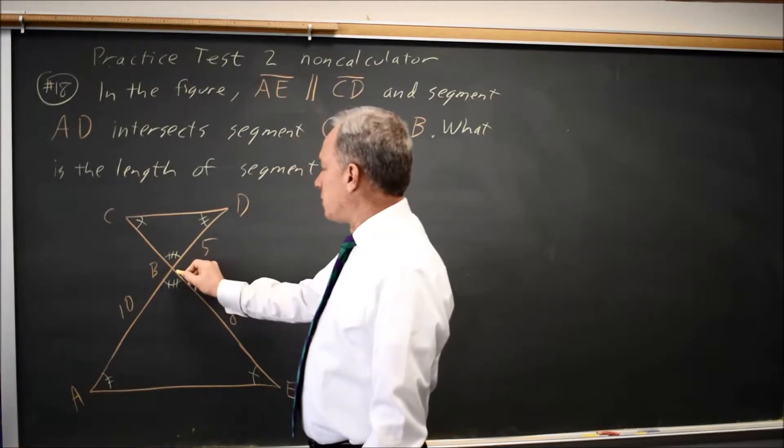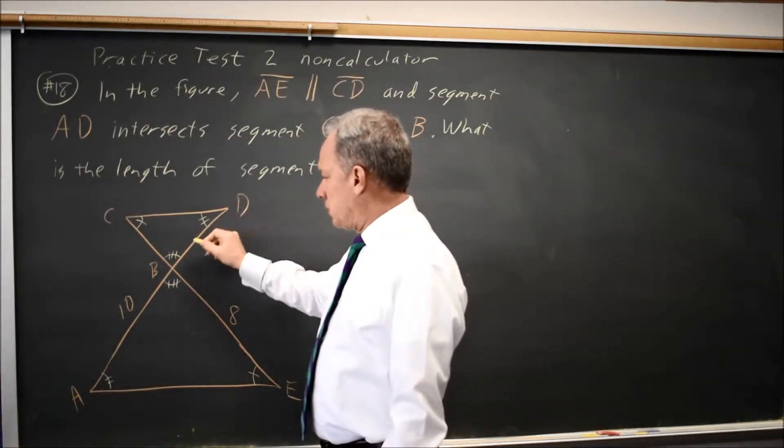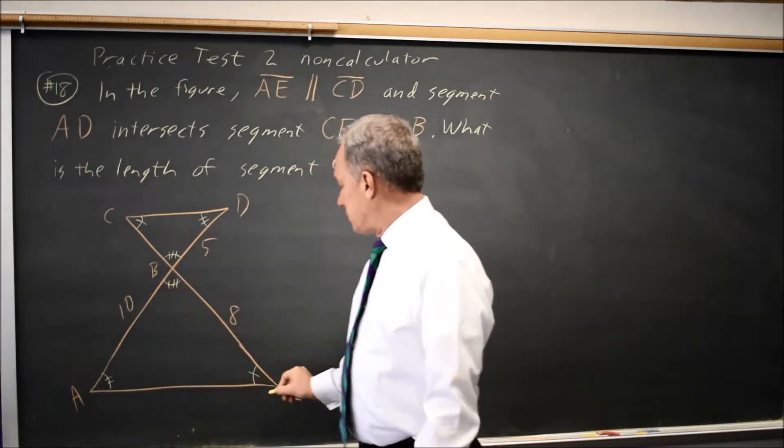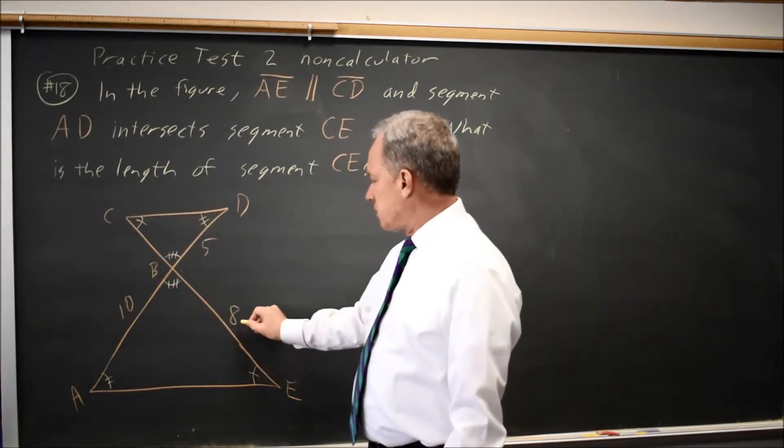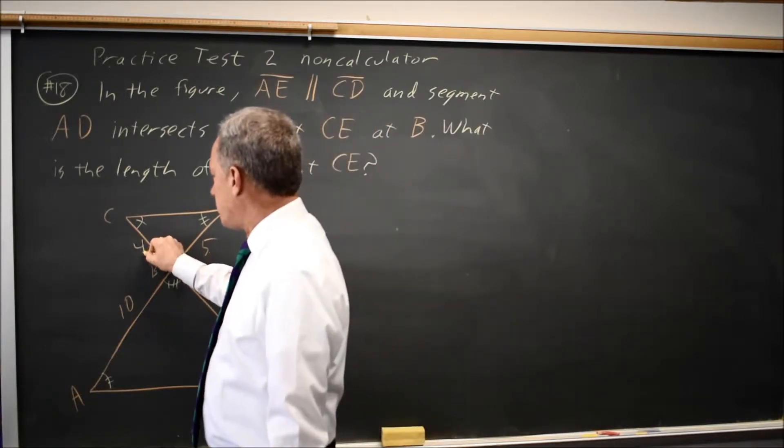Since AB is twice as long as BD, the corresponding sides, BE, will be twice as long as BC. Since this side is 8, this side will be 4.